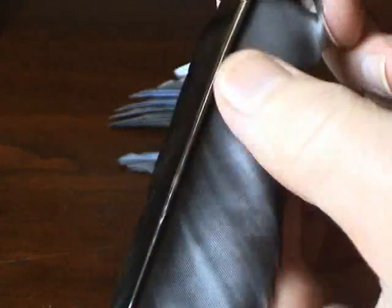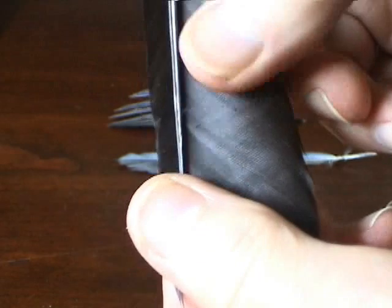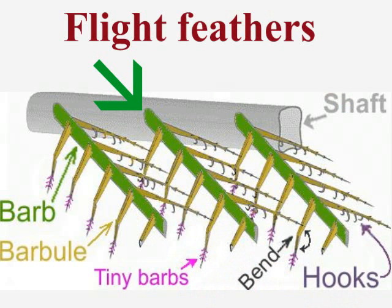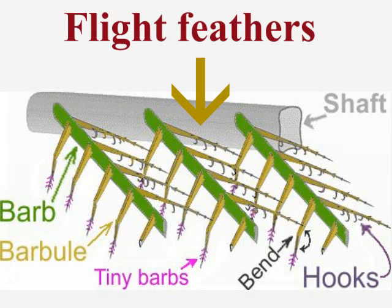A feather has one long shaft and there are hundreds of barbs coming off both sides of it. Each barb has lots of tiny barbules on both sides. However, on one side the barbules have hooks and on the other side the barbules provide the corresponding rods that the hooks grab a hold of.